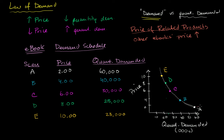At $2, it's more likely that more people will want it, because the other stuff is more expensive. At $4, more people will want it. At $6, more people will want it. At $8 and $10, more people will want it. So if this were to happen, that would actually shift the entire demand curve to the right — that is scenario one.